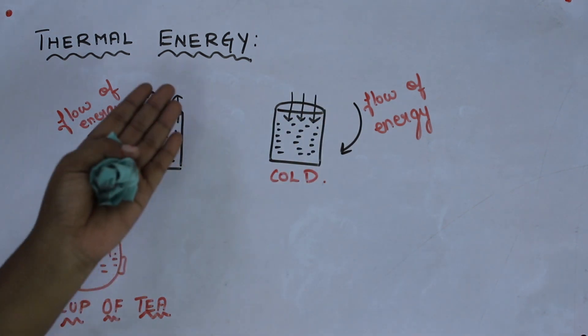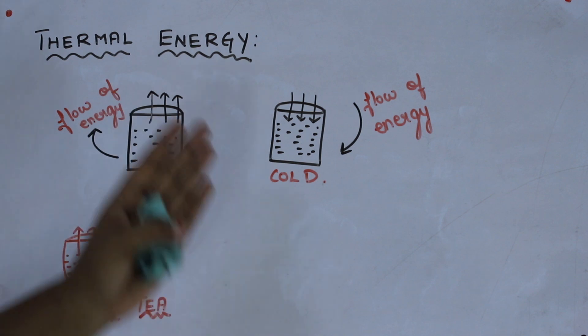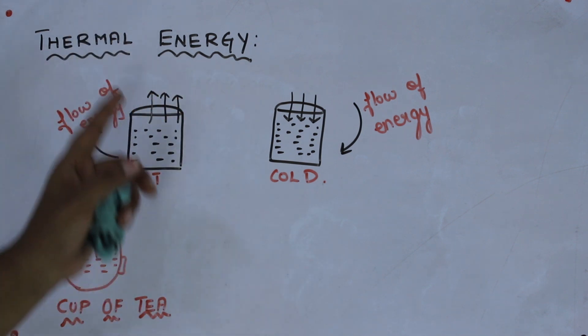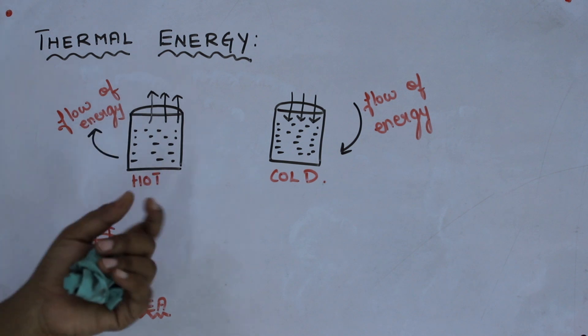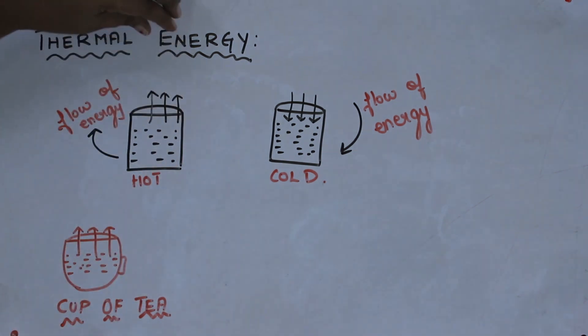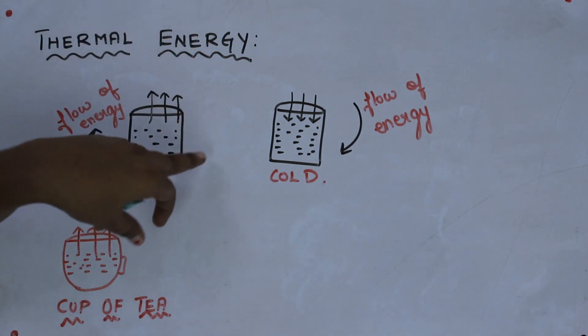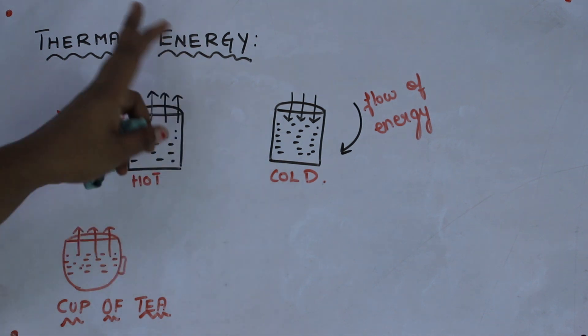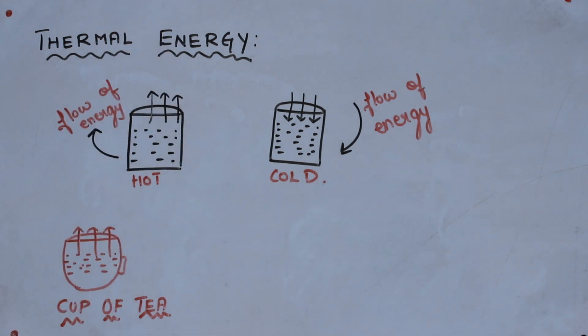So this is said to be the thermal energy. When a hot object is in contact with the cold object, a form of energy that flows from the hot object, this is known as the thermal energy. I will give you one more example for the thermal energy.